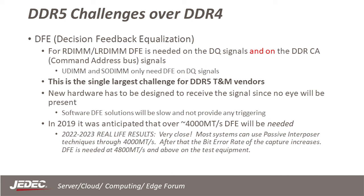The largest single challenge for DDR5 is the closed eye at the probing point. The current crop of logic analyzers and protocol analyzers has no DFE. Because of this problem, T&M vendors have been hard at work trying to provide solutions. FuturePlus and Keysight have been working on DDR5 over the last four years. Based on simulations, we anticipated needing DFE when the bus reached 4,000 megatransfers per second — and we were correct. DFE is needed at 4,800 megatransfers per second, and between 4,000 and 4,800 MT/s the bit error rate increases, leading to some captures being unreliable.